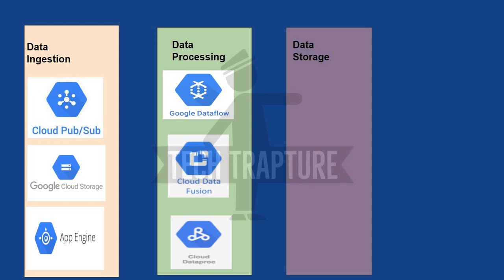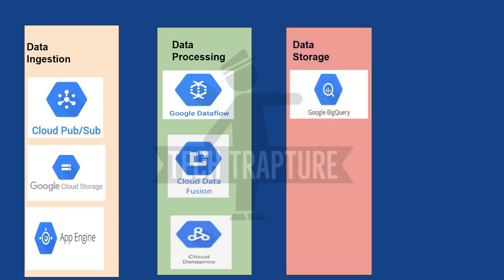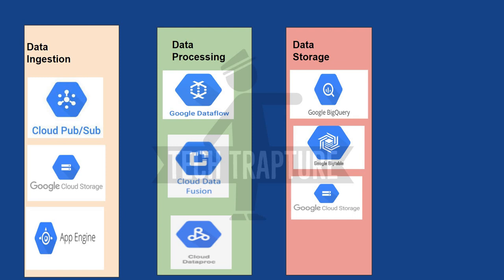Once your data is transformed, you need to store it. For large data storage you have Google BigQuery — a serverless data warehouse service. Google Bigtable is a NoSQL database for storing large amounts of time-series data, such as IoT device data. Google Cloud Storage is for object storage — audio files, video files, and so on. The source and destination can be varied; for example, data can be pulled from BigQuery, transformed, and loaded back into BigQuery or stored in a GCS bucket.